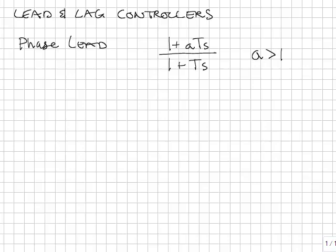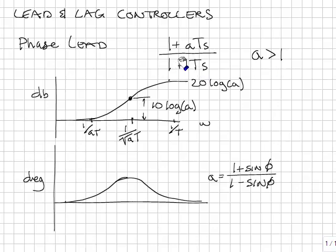The phase lead controller has the form shown here. It's made up of a zero and a pole where the parameter A is always greater than one. The DC gain is always one. We set S equal to zero. The zero comes before the pole.